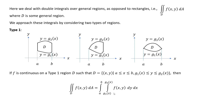For a type 1 region, the double integral of f(x,y) dA equals the integral from a to b of the integral from g₁(x) to g₂(x) of f(x,y) dy dx. Because the y limits are functions of x, we must integrate with respect to y first, then integrate from a to b with respect to x.